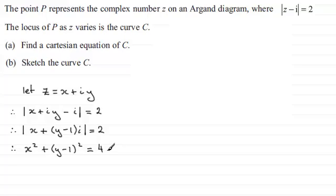So what we've got here is the Cartesian equation of the curve for part A. So what does this represent? Well, it represents the form of a circle. And the centre of the circle has coordinates 0, 1. And the radius is the square root of 4, so the radius will be equal to 2 units.